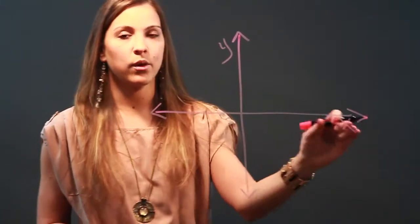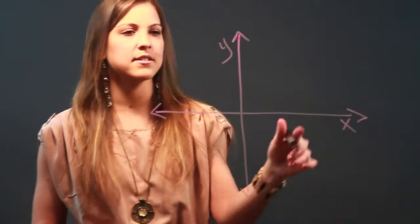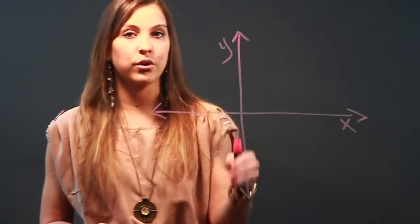So it's important that we get those right. The line going across or horizontal is x and the line going up and down or vertical is y.